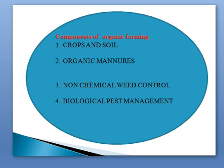Weed control is one of the main concerns in organic agriculture, as the use of herbicides is strictly prohibited due to environmental pollution. Crop rotations, green manure management, and tillage are generally used to prevent weeds. In addition, mechanical and thermal methods are also used in a pre-emergence system. Mulching is also used on a large scale to control the weed population in the field.